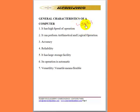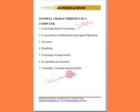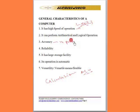The processor speed can be measured in megahertz or gigahertz. The computer also performs arithmetic and logical operations — it can perform calculations on input data through what we call the ALU, Arithmetic Logic Unit. The computer is also very accurate and produces accurate results.